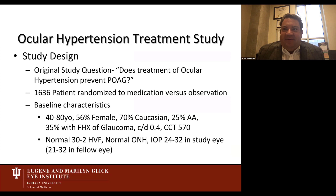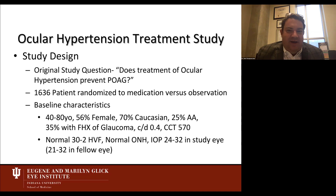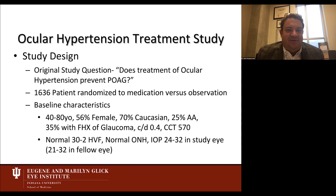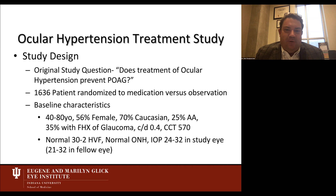The first study I'd like to discuss is the Ocular Hypertension Treatment Study, out of Washington University St. Louis, spearheaded by Michael Kass and Mae Gordon. The study was conceived in the 1990s and the original question was: does treatment of ocular hypertension prevent primary open-angle glaucoma? It was a very large study — 1,636 patients randomized to medication versus observation to see if treating high eye pressure prevents open-angle glaucoma.